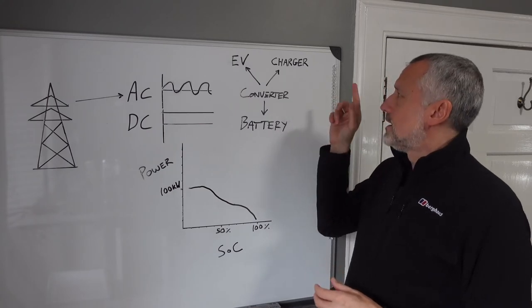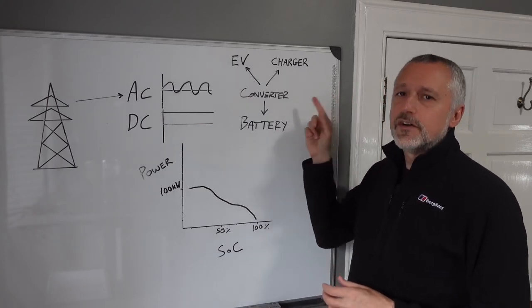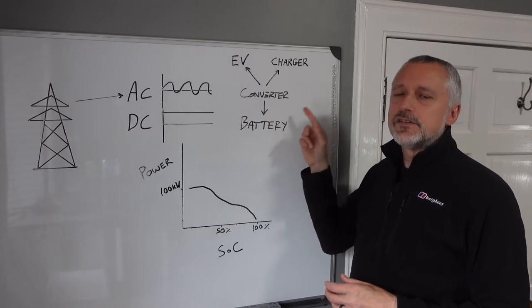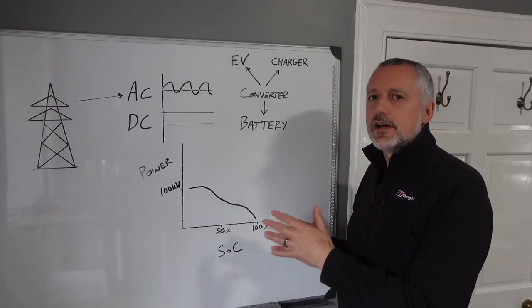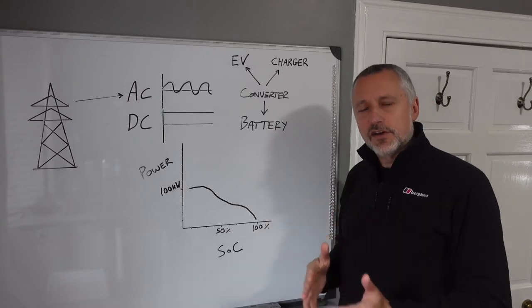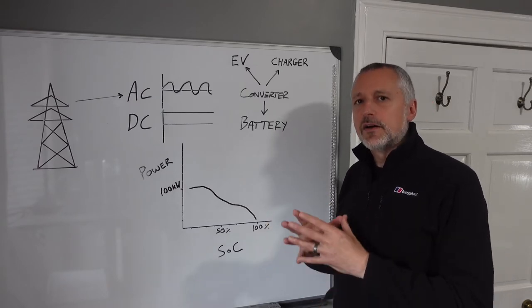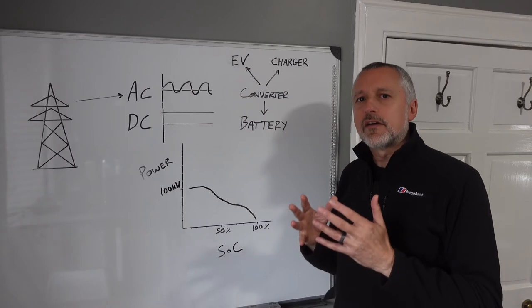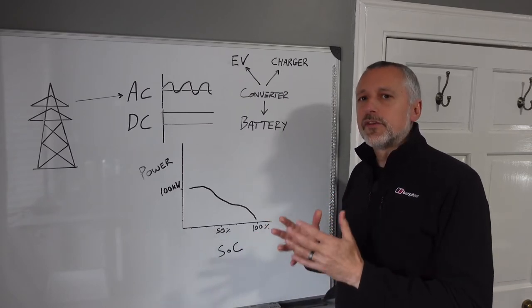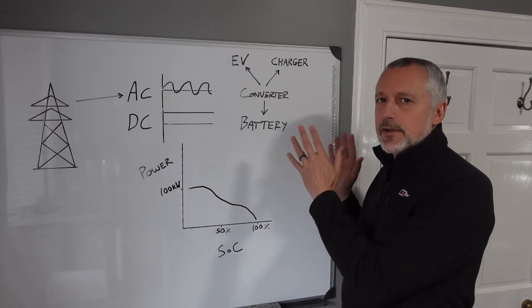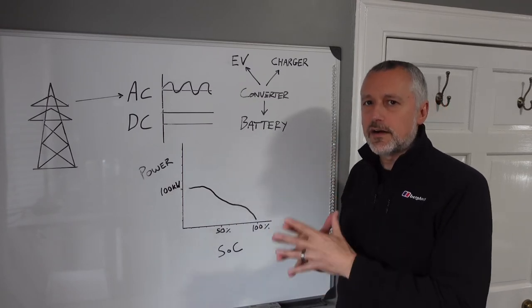DC charging - the charger itself converts the AC into DC, so you can get a bigger converter in a charger and therefore you can get much faster speeds. That's why on a DC charger you get rapid charging and ultra-fast charging speeds of up to 350 kilowatts, because it's happening in the charger and not in the car.